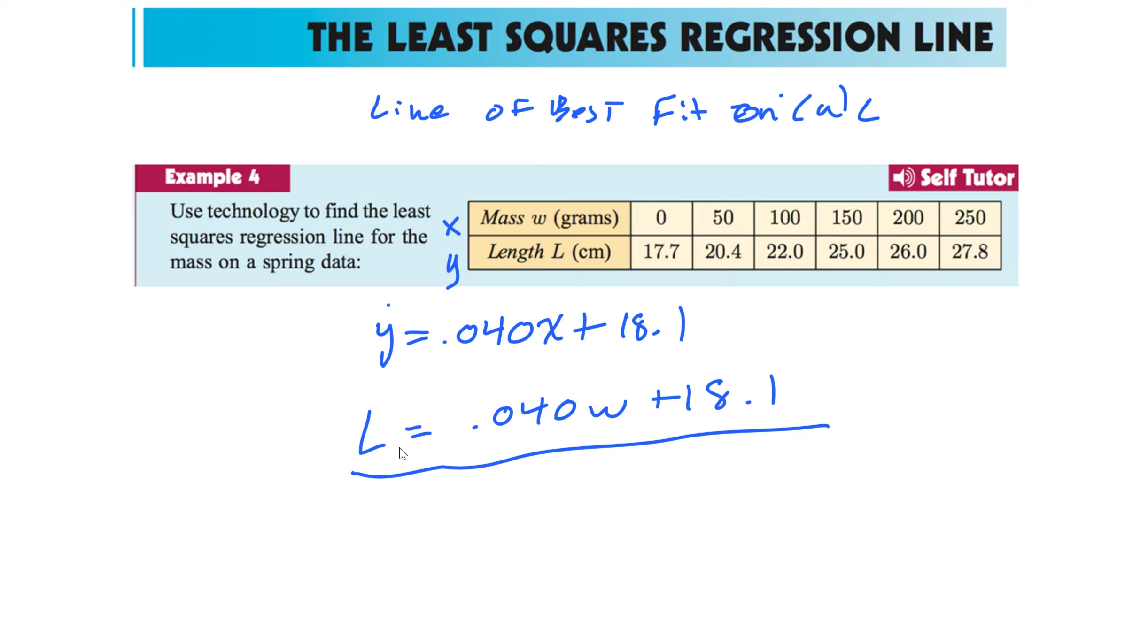And that's how you find a line of best fit. Or a least squared regression line. That gives you your data there. And again, once you have this. The possibilities are endless. I could plug in a weight of a certain gram. And figure out how long it's going to be. I could plug in the length and figure out the weight. All that good stuff. I could figure out the correlation. Which in this case is 0.9. So very strong positive. All that good stuff.